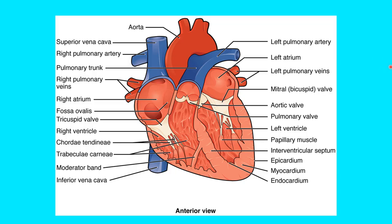Next time you're a hunter or even fixing a turkey or chicken, pull the heart out and slice it. You can see the chordae tendineae, the different chambers, the difference in thickness of the myocardium, the different valves, and the different vessels. If you're not sure where a vessel goes, take a toothpick or a straw and put it through one of the vessels and see where it comes out. Have fun with it and learn it. We also have links to videos of heart dissections — some we did, some others did — and it's really cool to see.